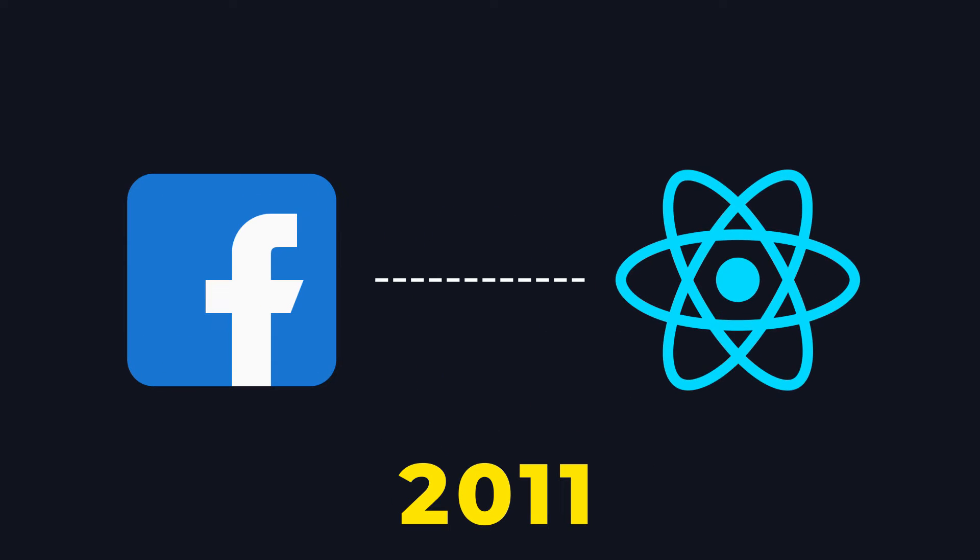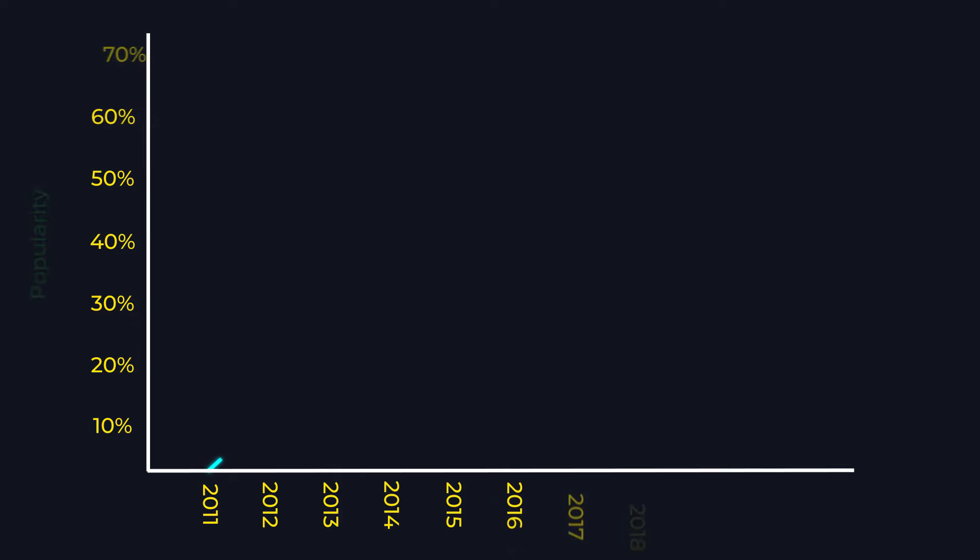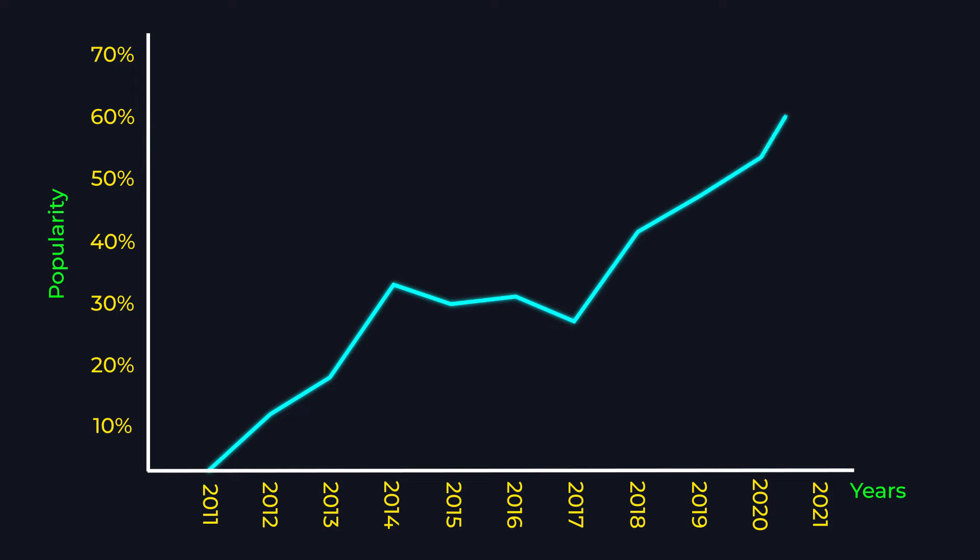In 2011, Facebook launched React, and in less than 10 years, React became the most used JavaScript library in the entire web development industry. Basically, React is dominating all front-end frameworks. But why did React gain so much popularity? Let's see this.